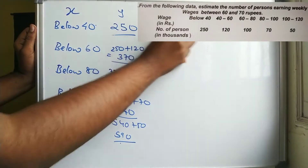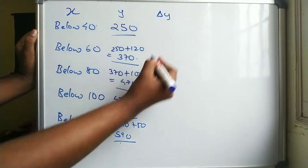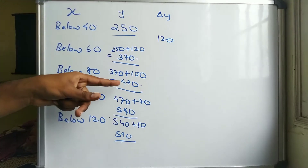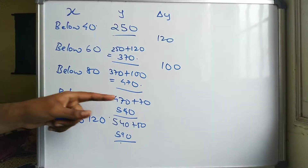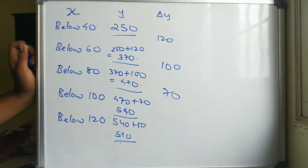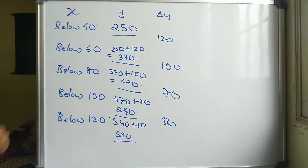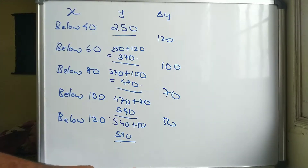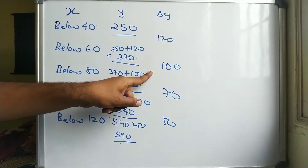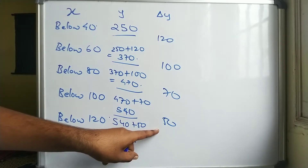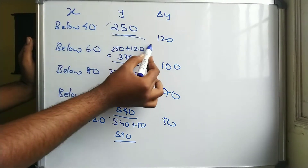Now we compute the difference table. Delta y (Δy): 370 - 250 = 120, 470 - 370 = 100, 540 - 470 = 70, 590 - 540 = 50. Delta squared y (Δ²y): 100 - 120 = -20, 70 - 100 = -30, 50 - 70 = -20.